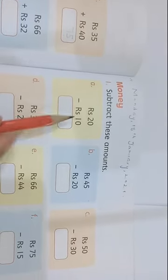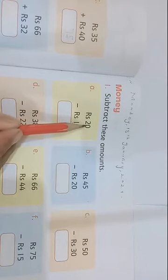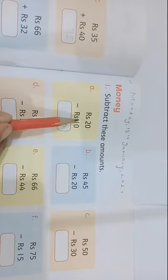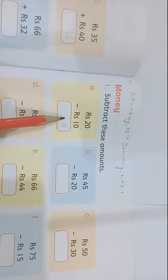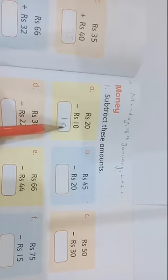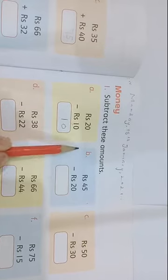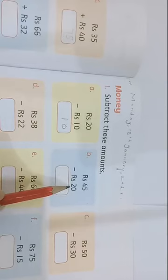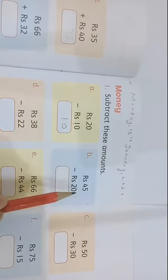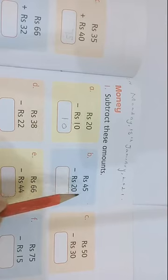0 is here. I will write 10. We have to cut 1 from 2. 2 is here. We have to take away 1. 2. We have to take away 1. I have 1. So, I have 10 rupees at this time. I will write 1.